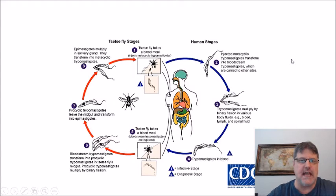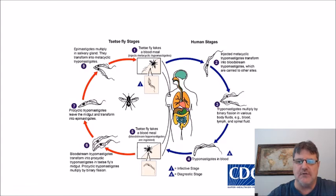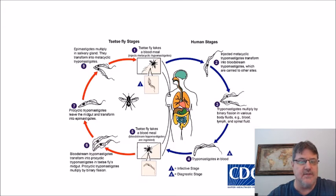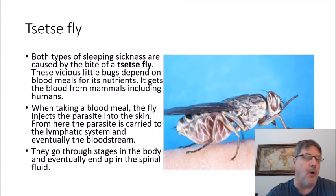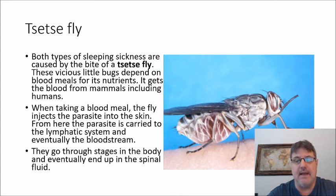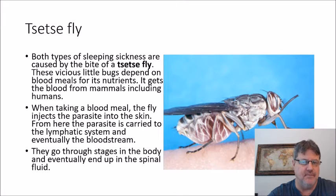This is an example of the life cycle of the parasite. The part of the chart closest to my picture shows the life cycle within the human, and on the left-hand side is the life cycle within the vector — the tsetse fly. The tsetse fly is the vector, and both types of sleeping sickness are caused by the bite of the tsetse fly. It's a very painful, very aggressive bite — very aggressive insect.